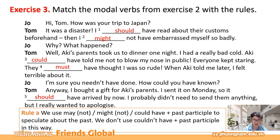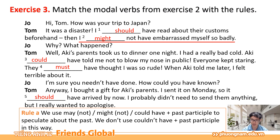Now let's analyze some of the examples from exercise number 2 so you can understand better the rules in this lesson. Chúng ta cùng xem qua một số ví dụ ở bài tập số 2 để các bạn hiểu rõ hơn. Rule A: I might not have embarrassed myself so badly — Tôi có lẽ đã không gây xấu hổ cho bản thân mình đến như thế. Đây là một cái suy đoán của tác giả. Might not hoặc là may not được dùng để thể hiện cái suy nghĩ về một cái tình huống trong quá khứ. Cấu trúc: modal verb (+ not) + have + past participle (V3/V-ed).